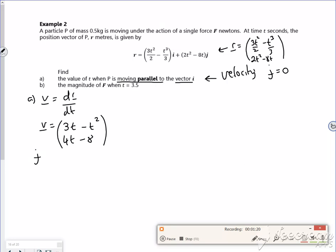So if I set my j component equal to zero, I've got 4t minus 8 is zero. So I've got 4t is 8, so t is 2 seconds. Wonderful.